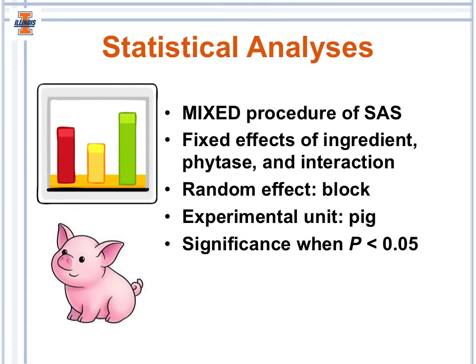For the statistical analyses, we used the mixed procedure of SAS. The model contained fixed effects of ingredient, phytase, and the interaction between ingredient and phytase. There was also a random effect of block, and the experimental unit was the pig. Significance was observed when p-values were less than 0.05.